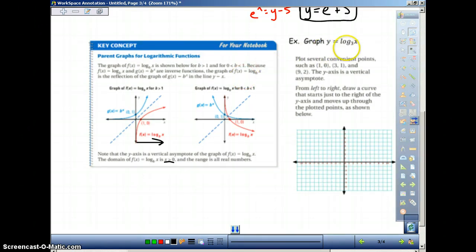So the typical domain will be x is greater than 0, the typical range will be all real numbers. So let's look at an actual example and just follow along here. So basically what we're looking at here is we have log base 3 of x. So what it says is plot several convenient points. In other words, we know that the equivalent to this is... 3 to the y equals x.